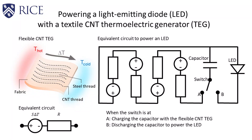In this video, we demonstrate powering a light emitting diode using a textile thermoelectric generator. The figure on the left-hand side shows the schematic image of our textile power generator. It consists of carbon-nanotube thread with steel thread in between, which were sewn onto a tissue using a commercial sewing machine.